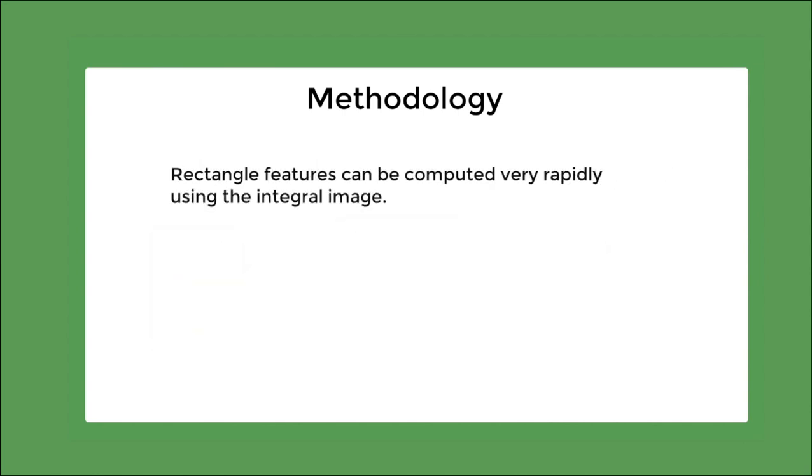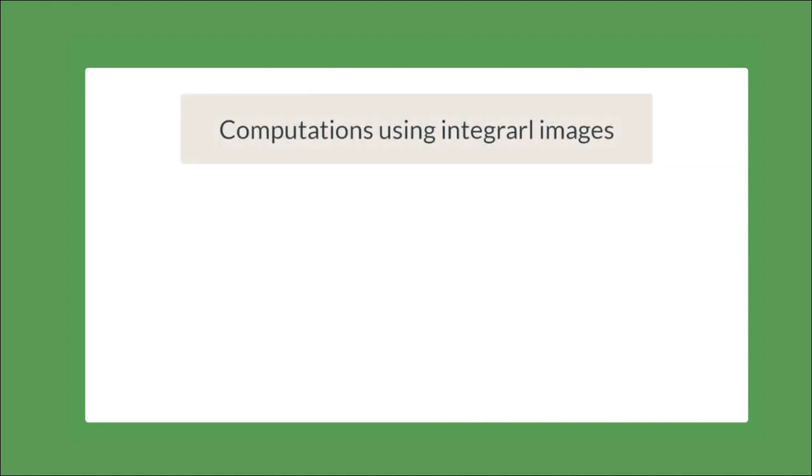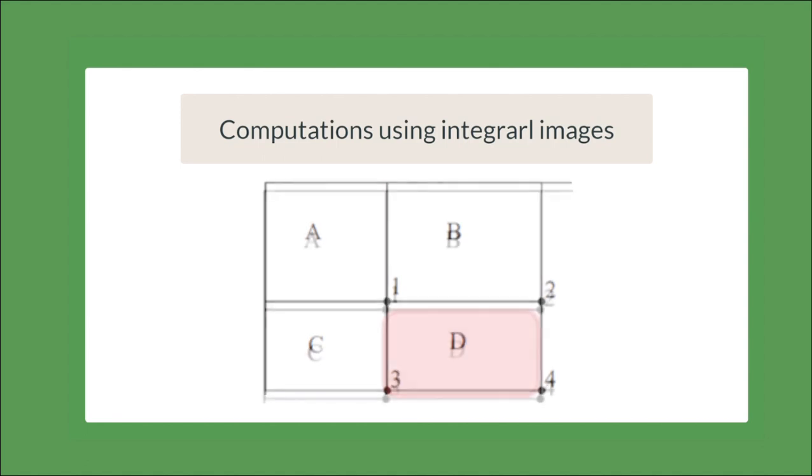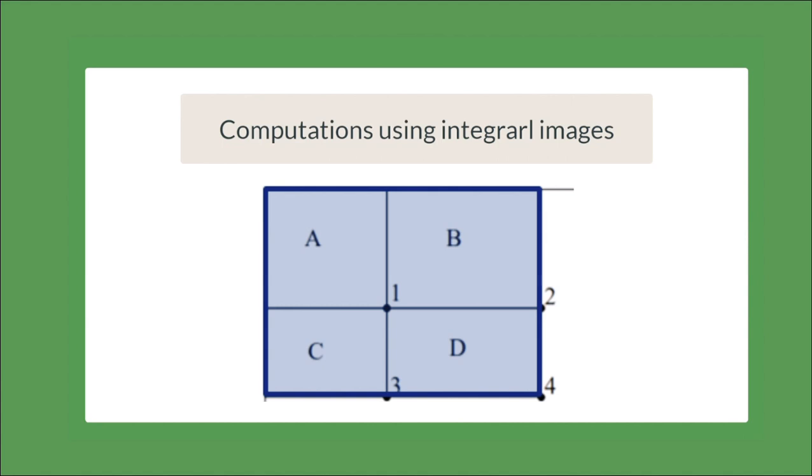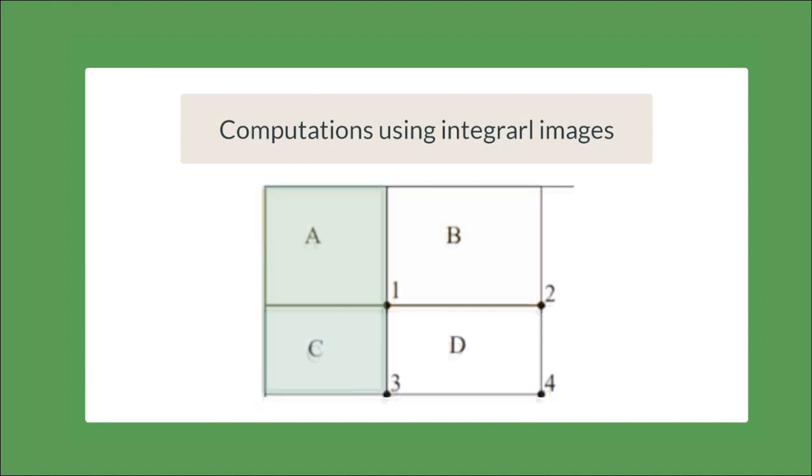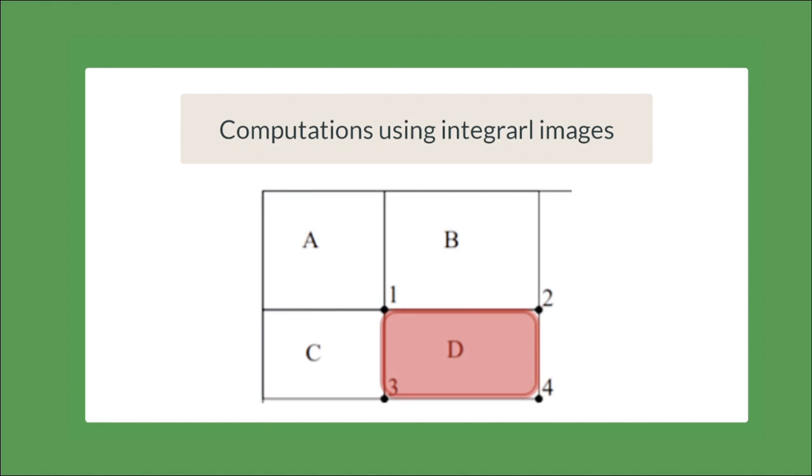Rectangular features can be computed very rapidly by using integral images. Now, suppose this is our input image. We want to calculate the sum of the pixel intensities in the rectangular region here. When we consider the integral image of this input image, the pixel value at 4 will be a plus b plus c plus d. And the location 2 will be a plus b. And at location 3, it will be a plus c. And at location 1, it will be a. So, d equals 4 plus 1 minus the sum of 2 and 3. We will see later how this leads to faster computations.